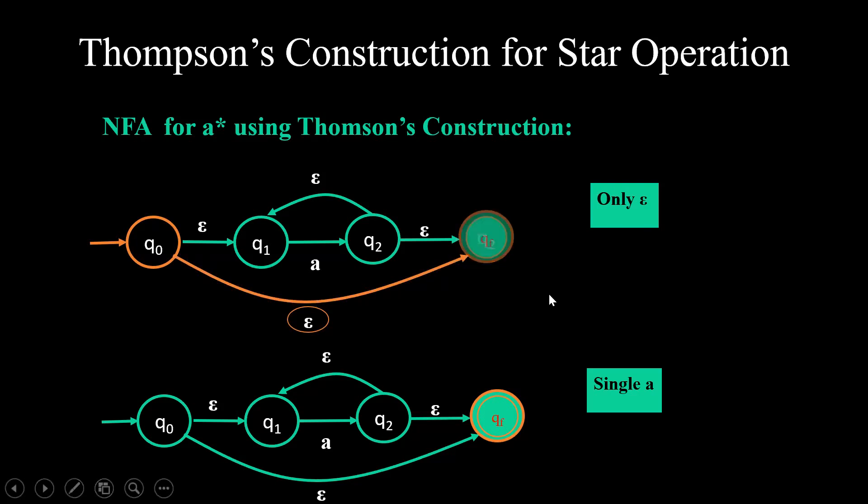If I say that I have to traverse only a single a, I'll start with q0. I'll move to q1. From here I'll consume one a from q1 to q2 and then after consuming one epsilon, I am moving to qf state. So that means I have only single a move from q1 to q2 but I have reached from start to final state. This is how star operation is being performed for a single a.